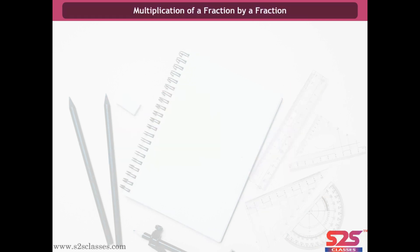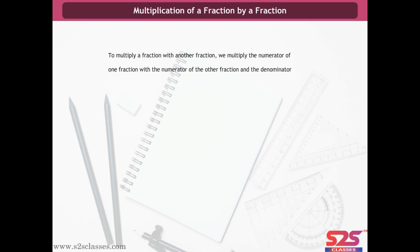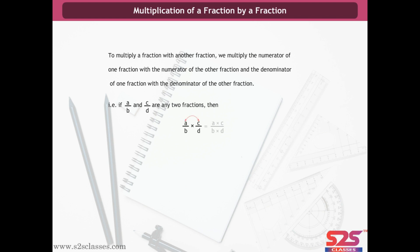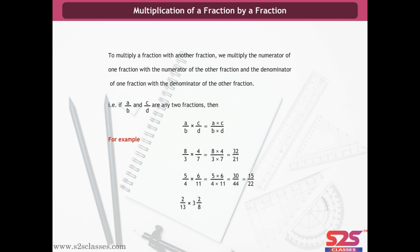Multiplication of a fraction by a fraction: multiply the numerators together and the denominators together. If A/B and C/D are any two fractions, then A/B × C/D = (A × C)/(B × D). For example, 8/3 × 4/7 = 32/21. Similarly, 5/4 × 6/11 = 15/22; and 2/13 × 32/8 = 1/4.